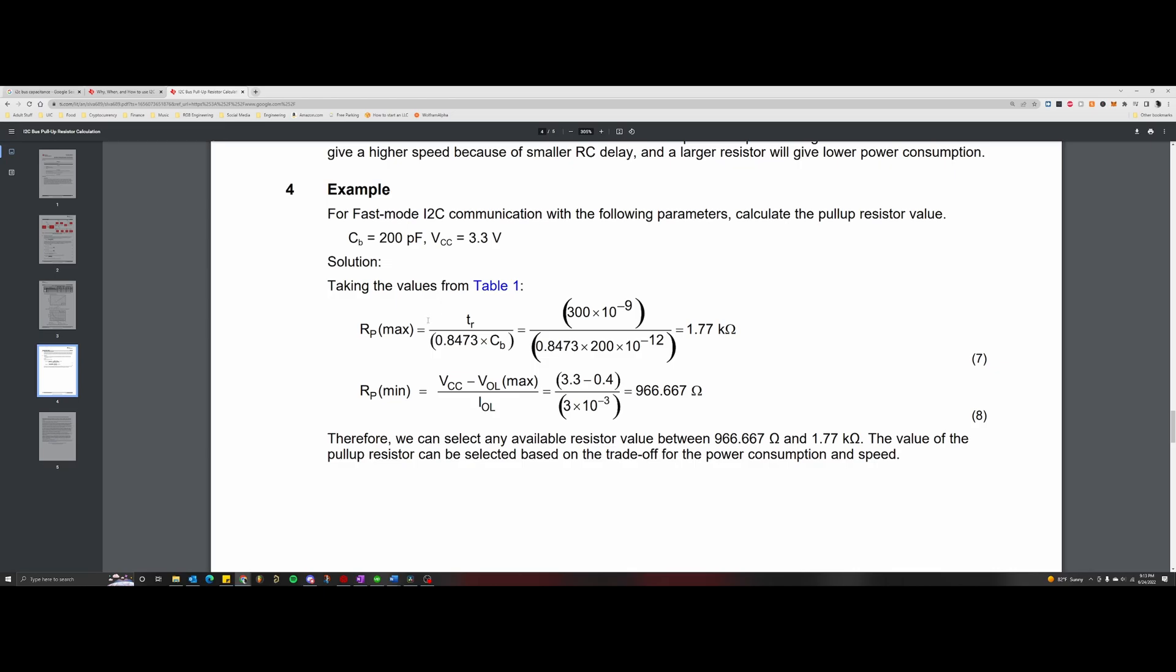So taking the values from table 1 that we referenced earlier in the video, we have our equations for RP max and RP min. Remember from table 1 that TR equal to the maximum allowable rise time for fast mode is going to be 300 nanoseconds. So we plug in 300 times 10 to the negative 9th for TR. And then for the total bus capacitance we just plug in 200 picofarads or 200 times 10 to the negative 12th, and then just run the calculation and it spits out a number of 1.77 kiloohms for the maximum allowable pull-up resistor value. Meaning you need to pick a value for your pull-up resistor to be something that is equal to or less than this value.